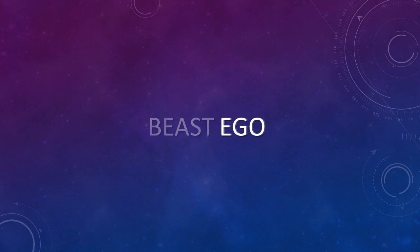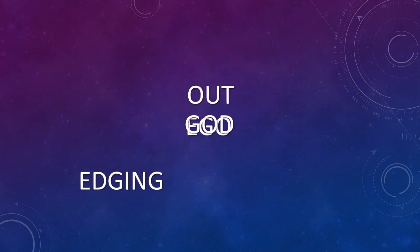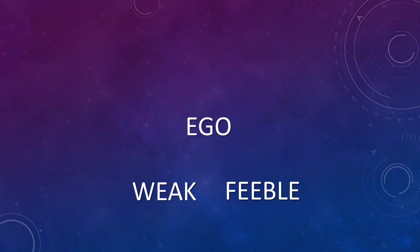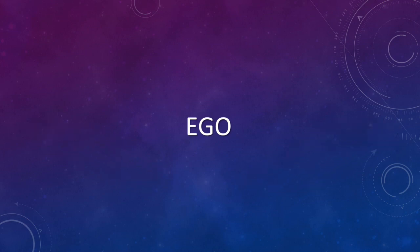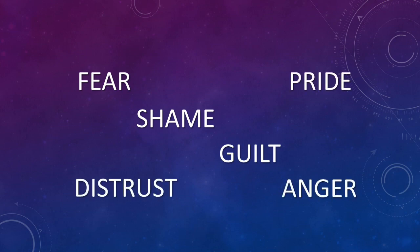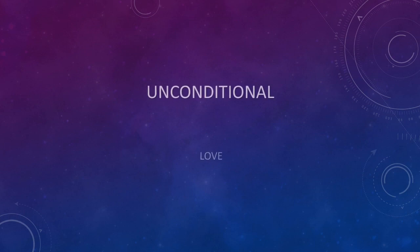This is what we deliver ourselves from — that which was the illusion of separation. Our ego, edging God out, keeping us weak and feeble, liberating us from the lesser system of the world that feeds off our energy to keep this matrix so that we operate in a limited form. We do this by transmuting our lower vibrational frequencies — especially of fear, shame, guilt, anger, pride, and distrust — into that of unconditional love through the heart.